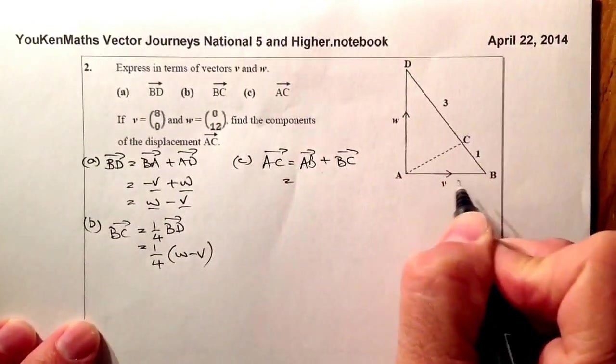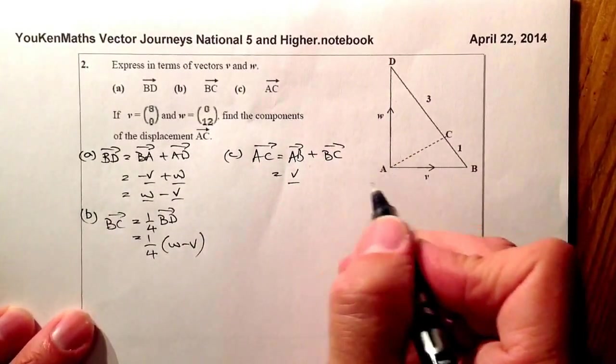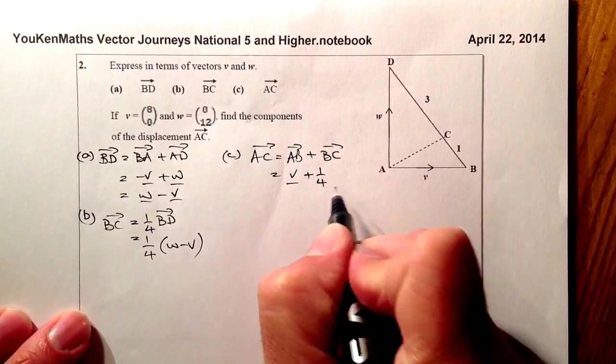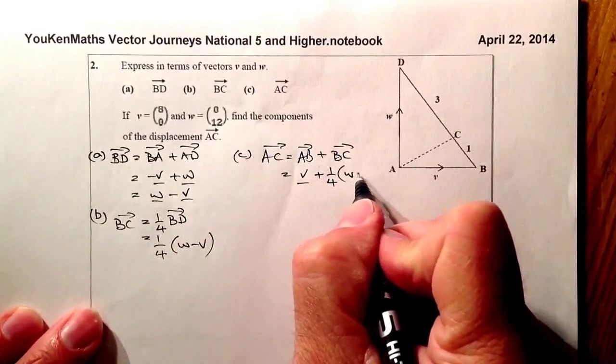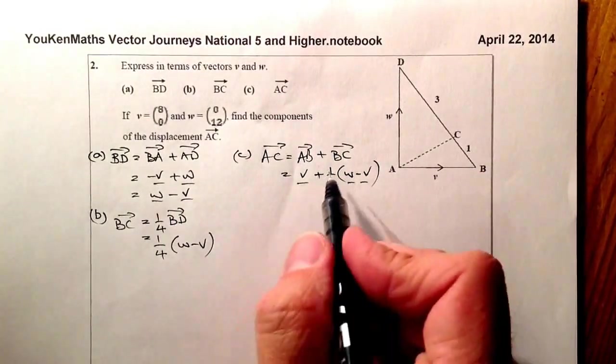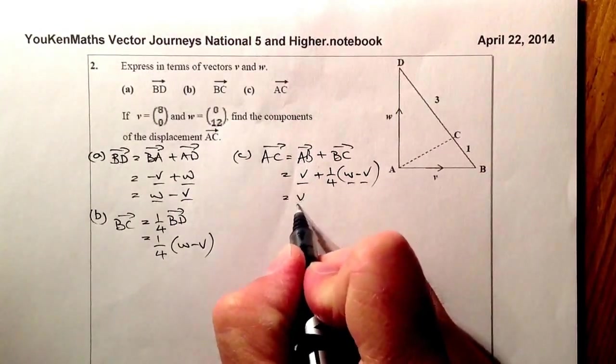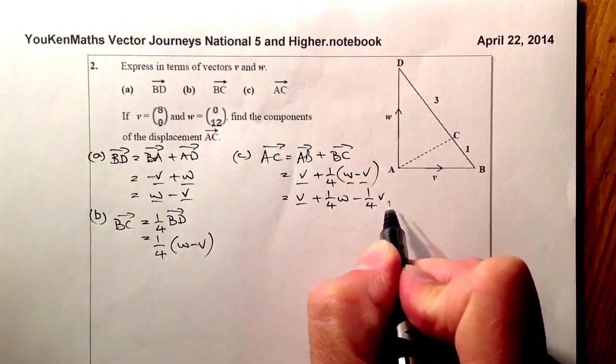So the vector AB is in the direction of V. What I've then got is I've got a quarter. I'm going to add on a quarter of W minus V. From there, what I'll do is I'll just multiply this part out. So let's go for plus a quarter of W, and that'll be minus a quarter of V.